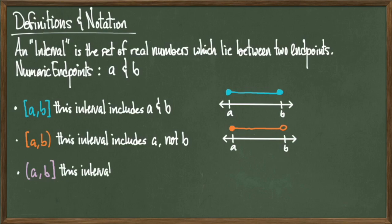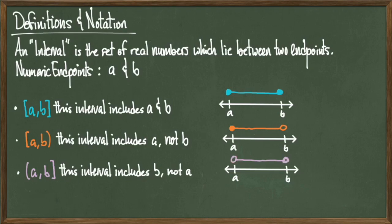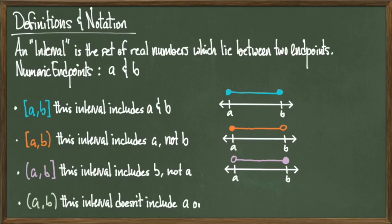The third piece of notation, (a, b], is the interval from a to b that does not include a but does include b. A has a parenthesis so we don't include it, but b has a square bracket which means we do include it. On the number line this gives an open circle over a and a filled-in circle over b. The last notation, (a, b), describes the interval from a to b that doesn't include a and does not include b — parentheses on both, so include neither. Draw open circles over both a and b and connect them with a line segment.